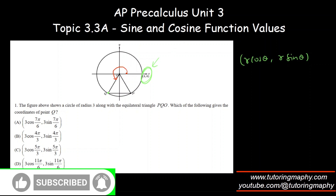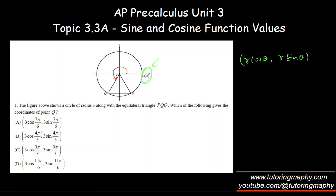This is in quadrant four. 300 degrees is in quadrant four, and replacing π with 180 gives 330 degrees — also quadrant four. 210 degrees is in quadrant three, and 240 degrees is also in quadrant three. 210 is close to the negative x-axis, and 225 is between them. So the best choice should be option B.